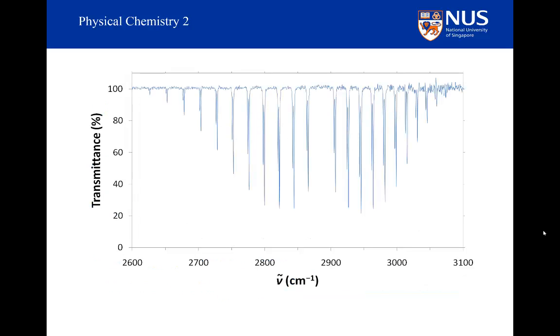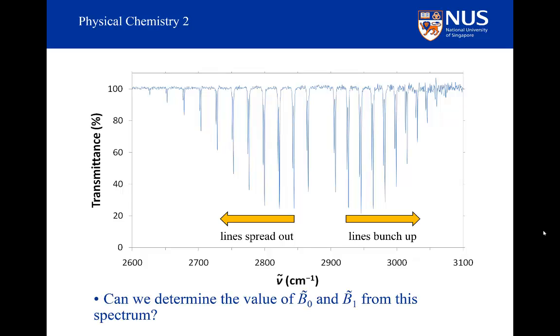And this is exactly what we saw in the gaseous HCl spectrum. The lines in the P branch are spreading out as we go to higher initial J state, and the lines in the R branch are getting closer together as we go to higher initial J state. From this spreading out and bunching up, we can of course also determine what B₀ and B₁ are from this spectrum.